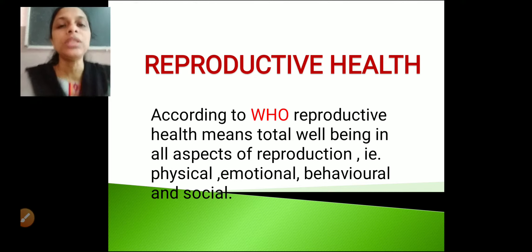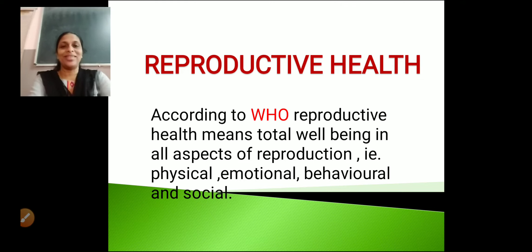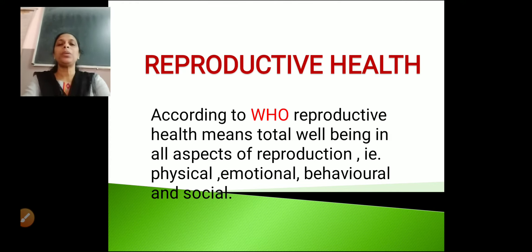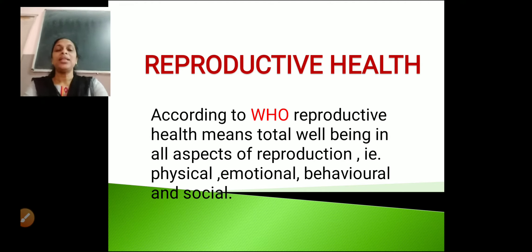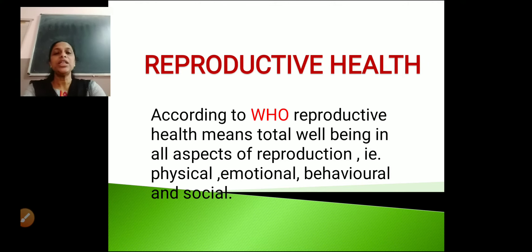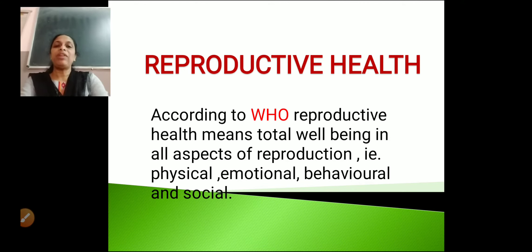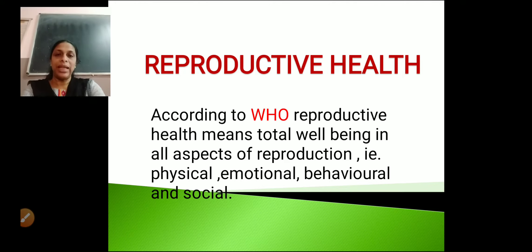The physical aspect of reproduction means the health of the reproductive organs. The emotional aspect means a person should be emotionally fit and fine. Then behavior — the reproductive behavior, how a person behaves with his partner, is very important. And even in a society, how a person behaves. So we can define reproductive health as the total well-being in all aspects of reproduction: physical, emotional, behavioral and social.